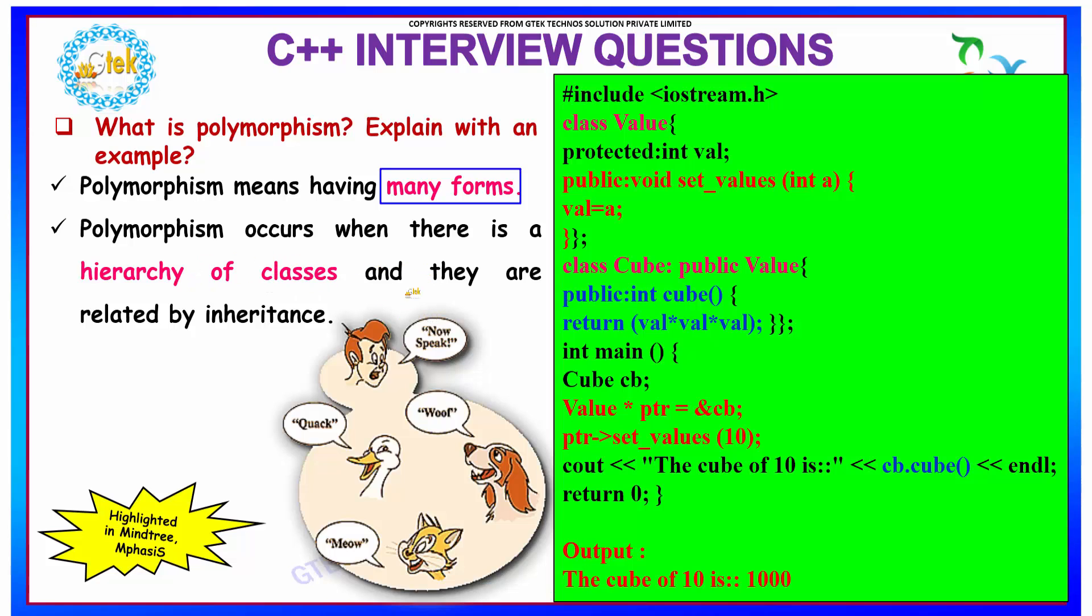Polymorphism occurs when there is a hierarchy of classes and they are related by inheritance. If you see over here, we have a base class value and it has its own set of variables and methods, say set values.